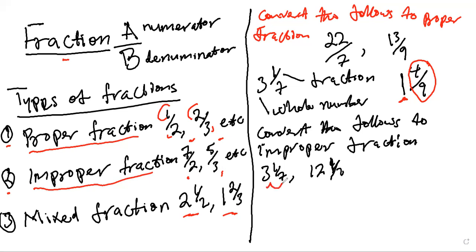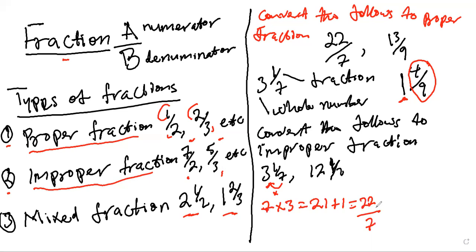So how do you do this? First of all, you're going to say seven times three — multiply that seven by three. Seven times three, and plus the numerator, which is plus one. That will give you 22. And the seven, which is the denominator, is going to be under this — so you say 22 over seven. So now we obtain improper fraction.